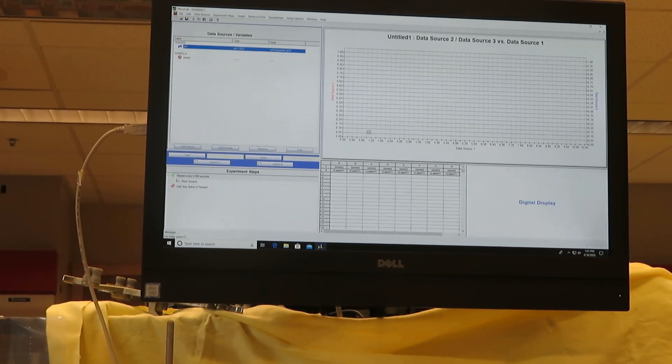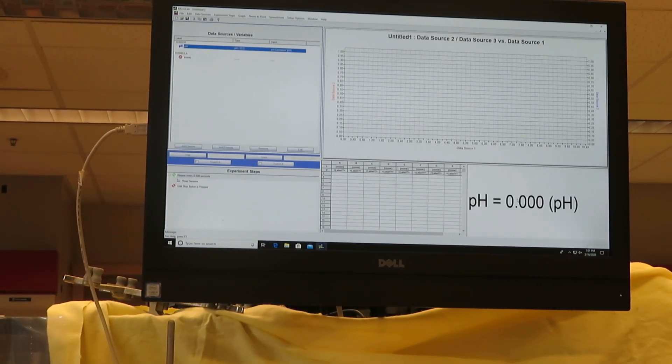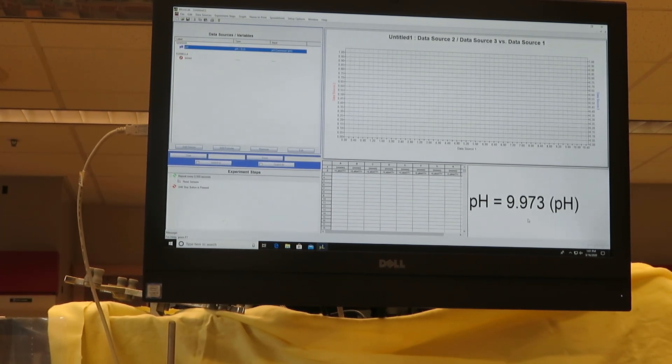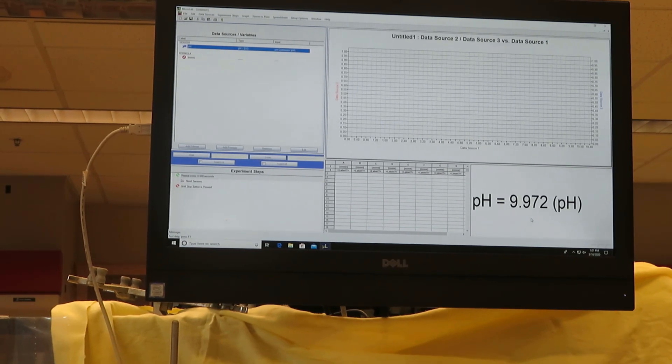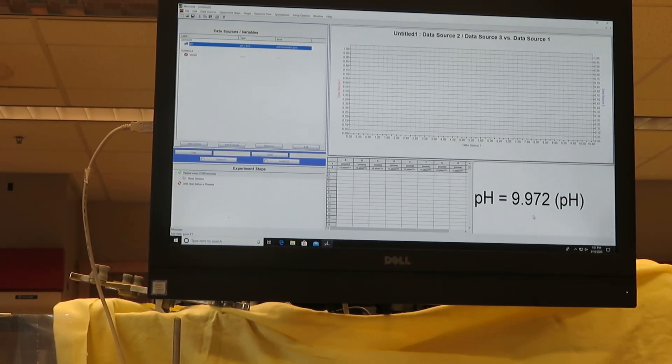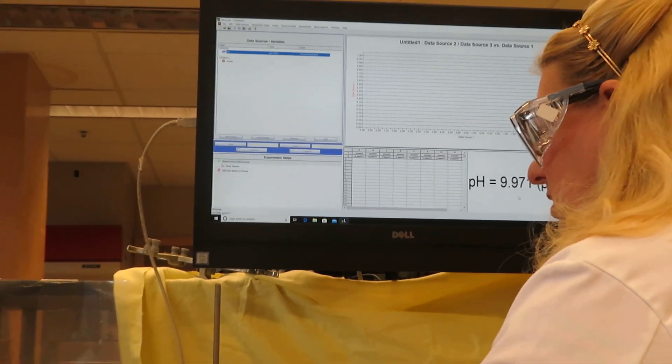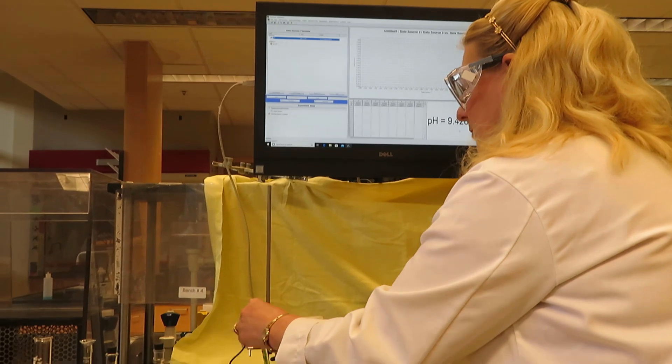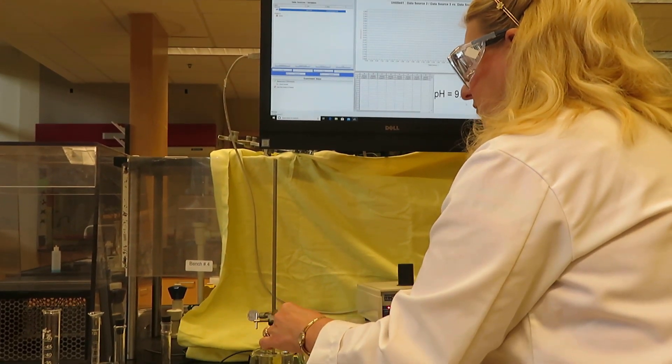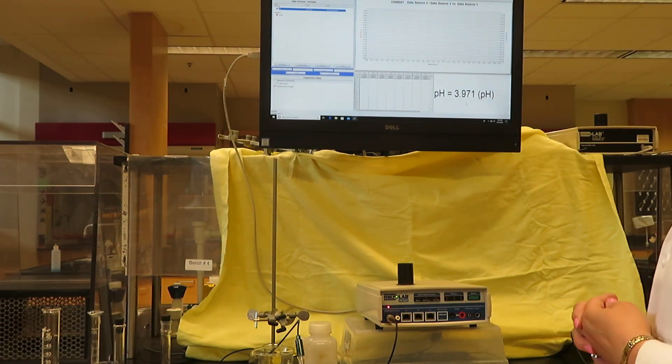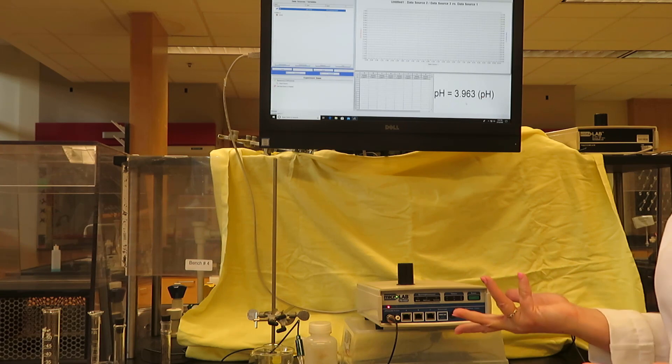Now, to read what the pH meter is sensing, I'm going to drag it here. One of the important things to do after calibration is to go back and measure your solutions to make sure they're reporting pH accurately. Let me start with pH 4 buffer. You can see it's reasonably close to 4 - it's reading 3.963. That's good.